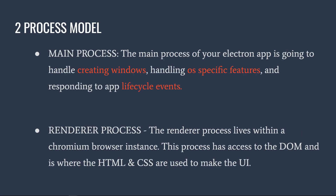The way Electron handles this is a two-process model. The main process, also known as the entry process, is basically where we handle our event life cycle. This means if the user clicks a minimize button or shuts their laptop lid — putting the computer into sleep mode — the main process is where we have access to that information and can respond to those events as they occur.